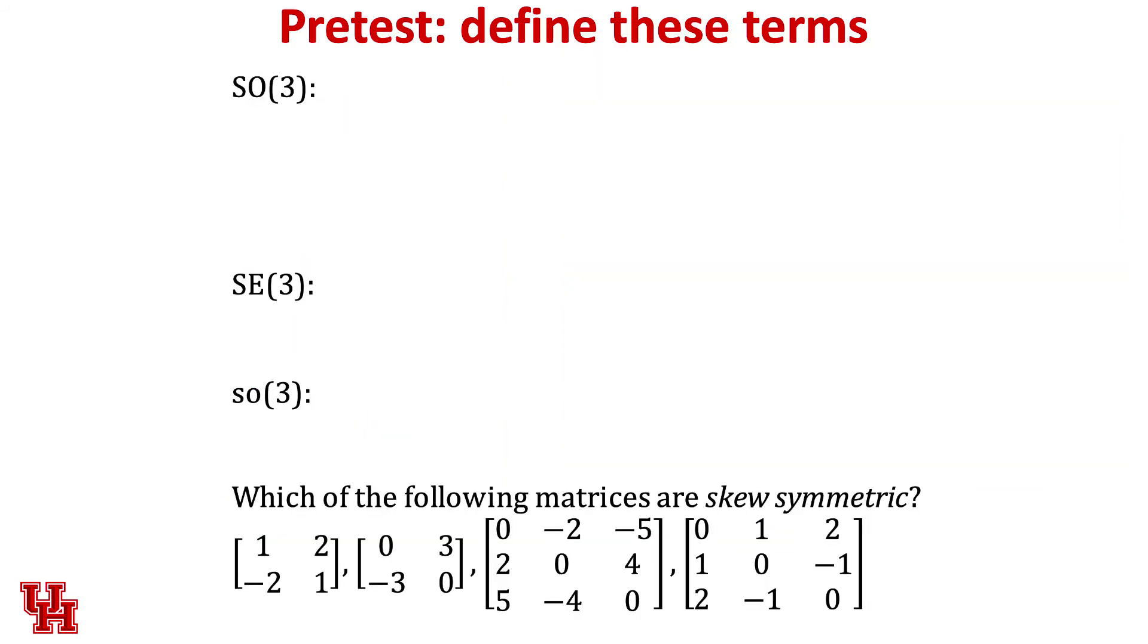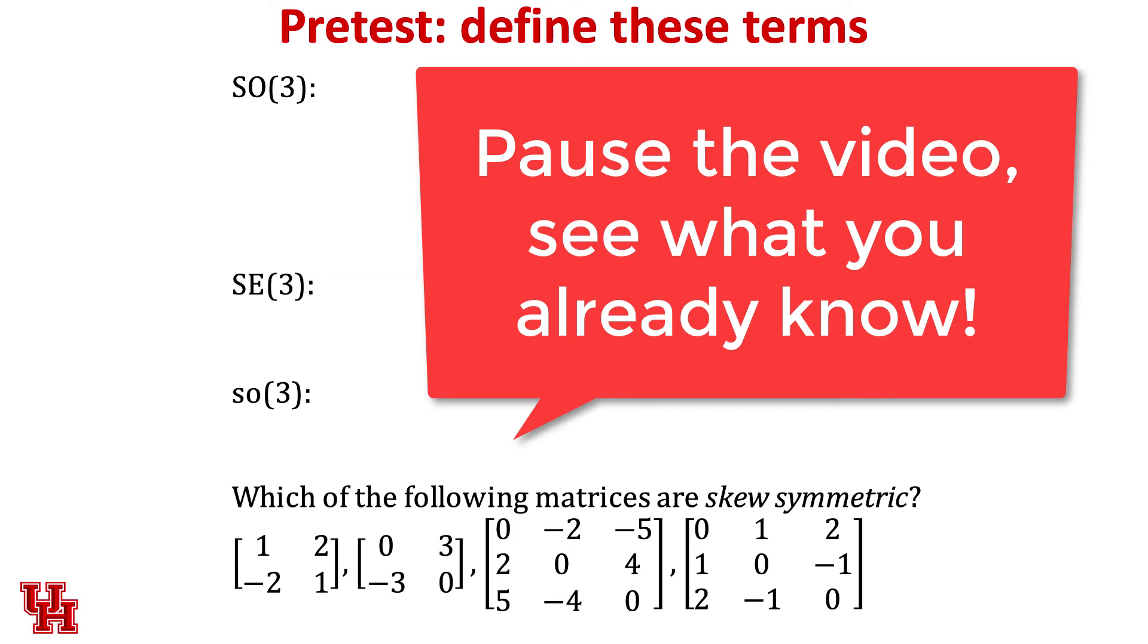All right. I'd like you to do a pretest to see which of these terms you already know. So I've listed out capital SO(3), capital SE(3), and then lowercase so(3). What I want you to do is pause the video and then write out the definition for each of these. Some of them you know. If you've read like you were supposed to read for today, you should get all of them. And then finally, I have four matrices down there. I want you to circle the ones that are skew symmetric. All right. Pause the video and see what you already know.